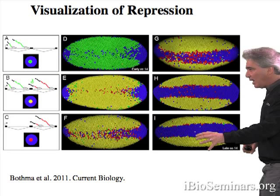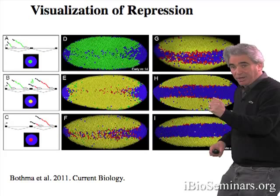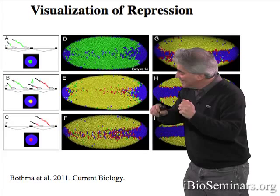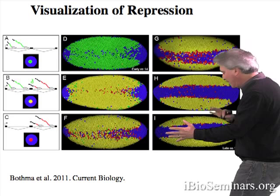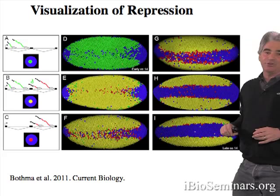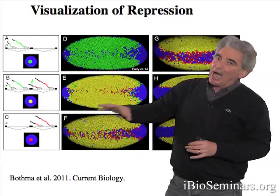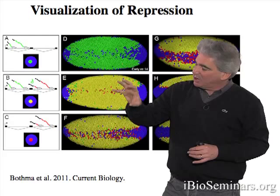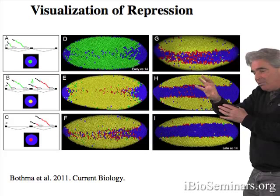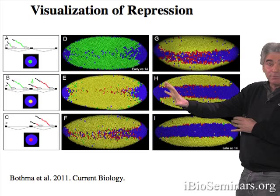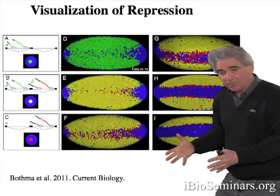Once snail represses SOG in the ventral mesoderm, pause polymerase is once again established at the SOG promoter, although SOG will never get turned on in the mesoderm again. It's turned off in the mesoderm by three hours after fertilization and will never come back on throughout the life cycle of the fly. Over the next several hours of development, the pause polymerase at the promoter regions of SOG in the mesoderm is lost. So you go from a gene that's repressed but poised — poised by virtue of containing the pause polymerase — to repressed and silent, which lacks the pause polymerase. This is a more stable form of gene silencing.